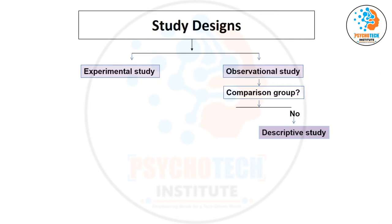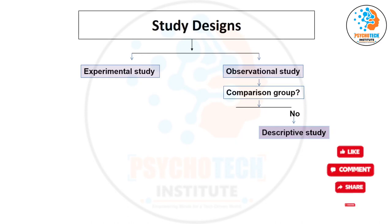But if your objective is not just to provide an estimate — if your interest is to see the relationship between two variables, like hemoglobin level in pregnant versus non-pregnant women, or the psychiatric condition of working versus non-working women, or whether tobacco is associated with cancer — then you have two variables and want to see the relationship or comparison. In that case, we call this an analytical study.